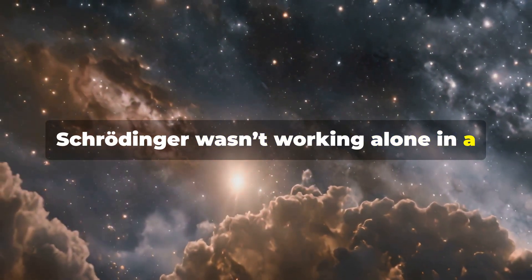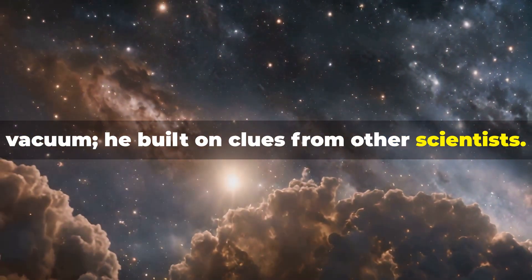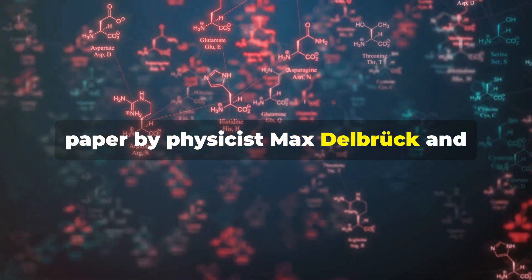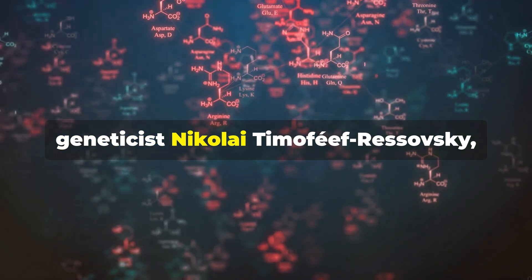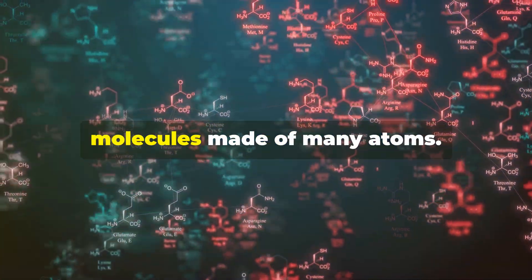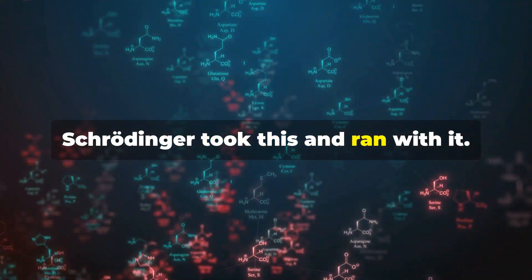Schrödinger wasn't working alone in a vacuum. He built on clues from other scientists. He was inspired by a 1935 paper by physicist Max Delbrück and geneticist Nikolai Timofeeff-Ressovsky, which hinted that genes might be large molecules made of many atoms.